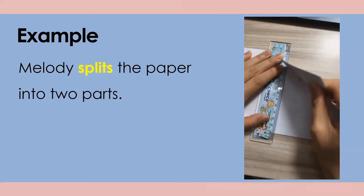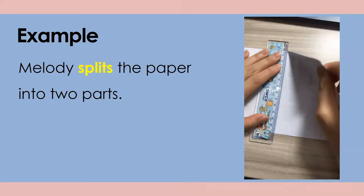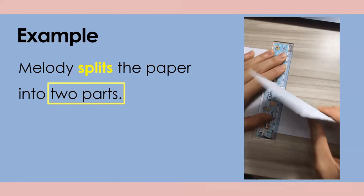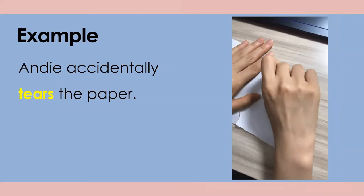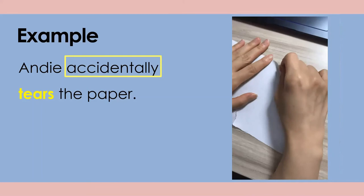那了解了重點之後呢，我們接下來透過例子，讓你更知道它們使用的時機吧。Melody split the paper into two parts. Melody把紙張撕成兩半。這邊的重點你找到了嗎？就是two parts，剛才我們提到把東西一分為二，所以分成兩半，我們用split。那例句二：Andy accidentally tears the paper. Andy他不小心把paper撕毀了。所以這邊的重點在accidentally，無意間不小心意外的，所以我們會用tear，把紙張不經意的撕毀。